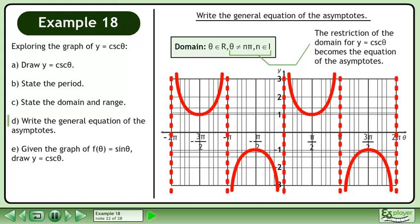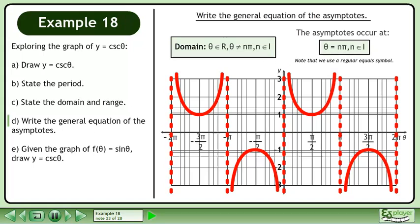The restriction of the domain for y equals cosecant theta becomes the equation of the asymptotes. The asymptotes occur at theta equals n pi, where n belongs to the set of integers.